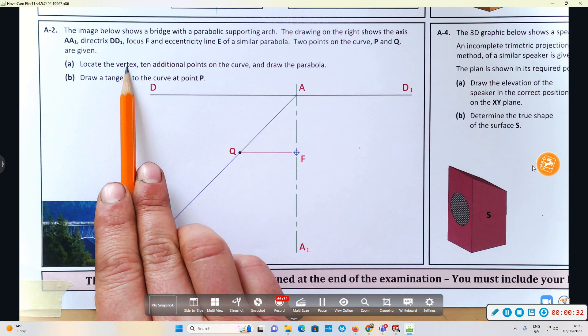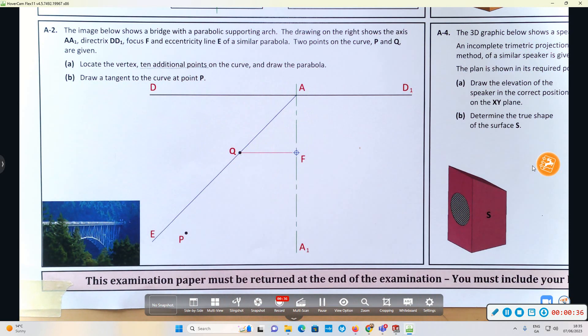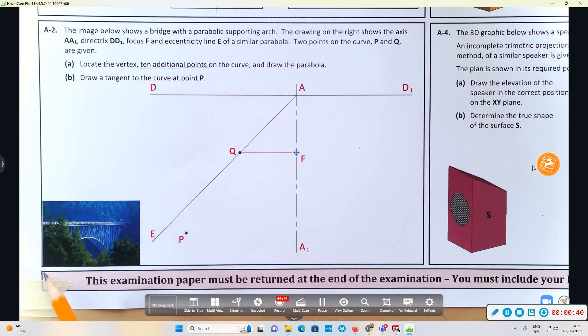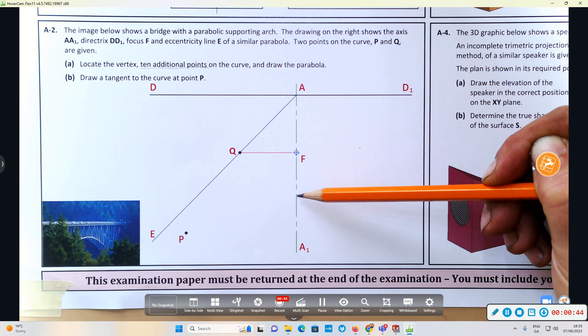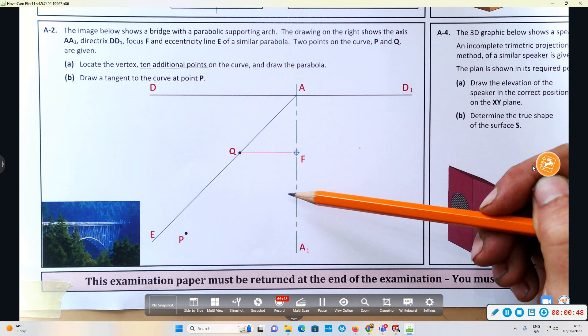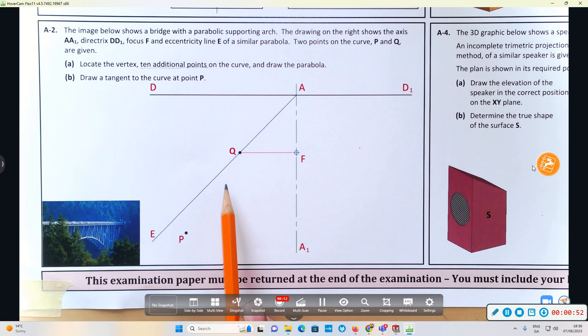We need to locate the vertex and then 10 additional points and draw the curve on the parabola. I wouldn't imagine they're asking for 10 additional ordinates. I'd say they're looking for five additional ordinates with five points on the left and on the right.